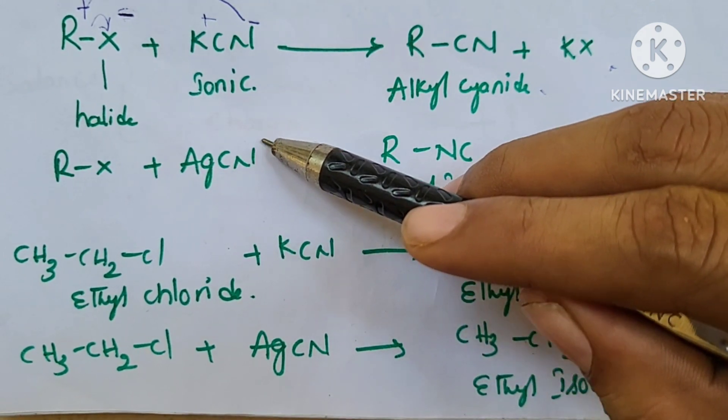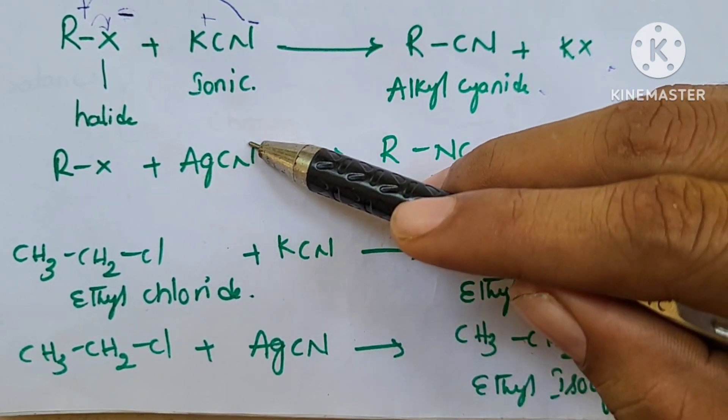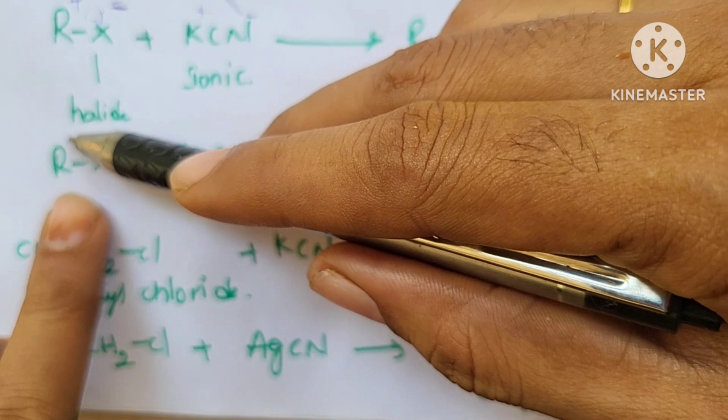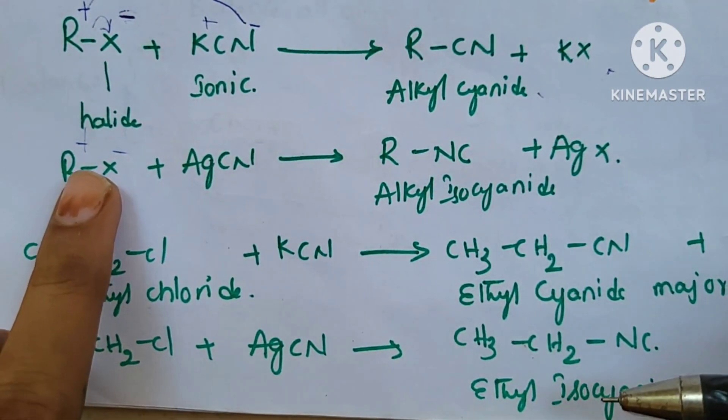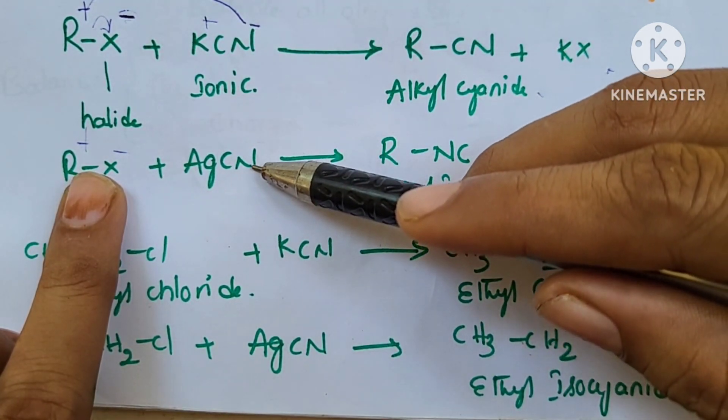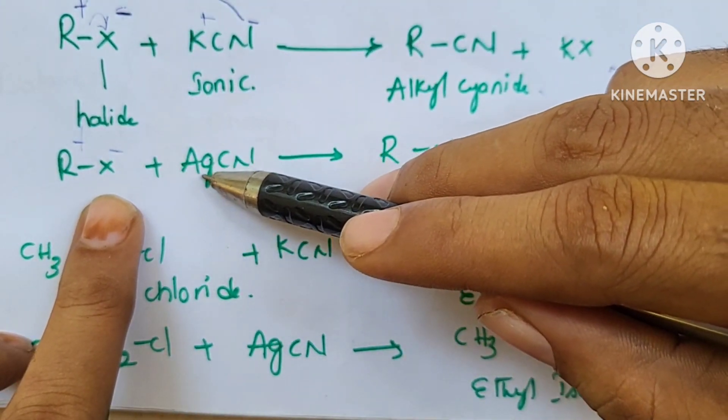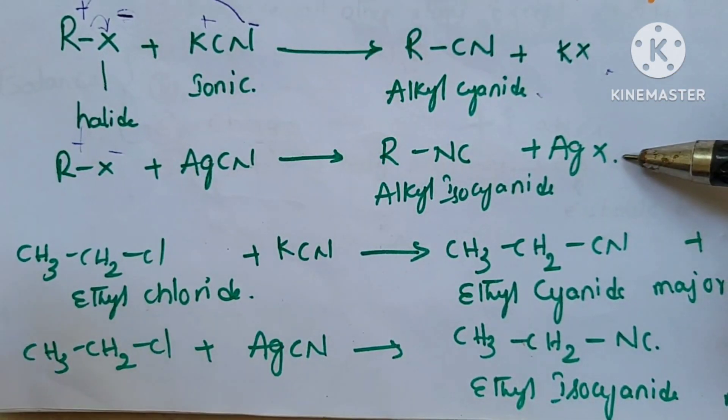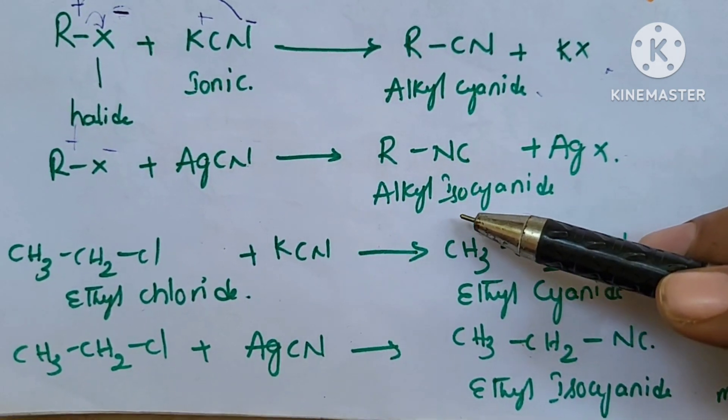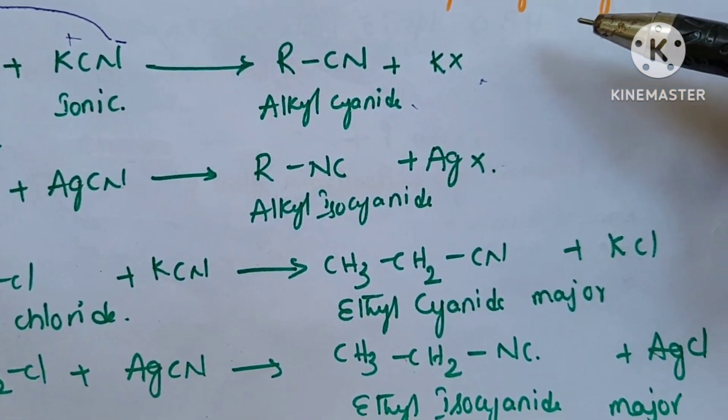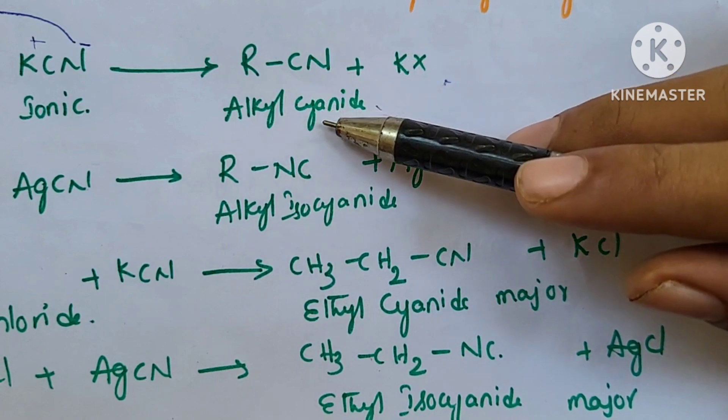Here, nitrogen is more electronegative than carbon. So nitrogen attacks to form R-NC. And carbon attacks to form R-CN with the alkyl group.